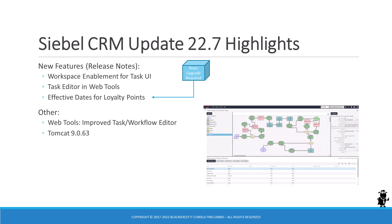Siebel Loyalty is regularly popping up in the new features section, this time with the addition of effective dating fields for loyalty points. Other notable changes are improvements for the Web Tools flow editor for workflow processes and tasks alike, and the update of Tomcat binaries to version 9.0.63.